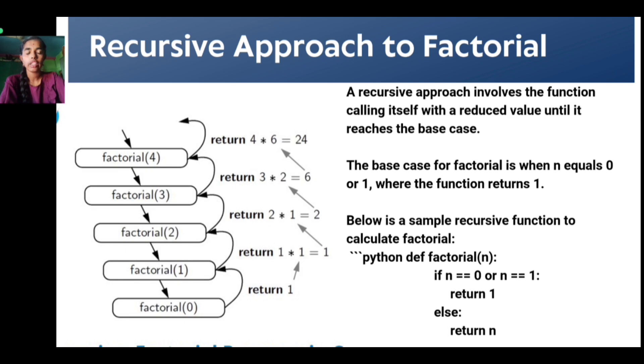The function continues calling itself with reduced values until it reaches the base case. The base case for factorial is when n equals 0 or 1, where the function returns 1. Below is a sample recursive function to calculate factorial.